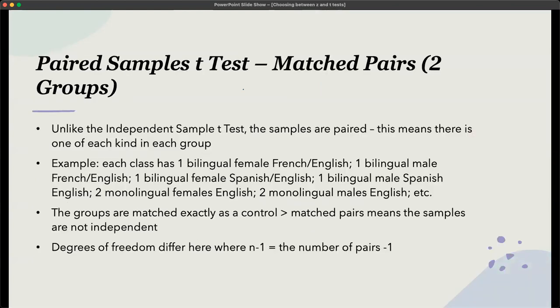Okay, finally, the paired samples t-test. So the paired samples t-test, also known as matched pairs. Unlike the independent samples t-test, the samples are paired. So there is one of each kind in each group. So here's another example. Each class has one bilingual female French-English, one bilingual male French-English, one bilingual female Spanish-English, one bilingual male Spanish-English.